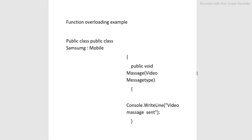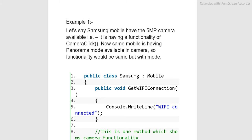Function overloading means having two methods with the same name — that is overloading. A real-life example: say Samsung mobile has a 5MP camera with basic camera-click functionality. Now say the mobile also has panorama mode available in the camera. So the functionality is the same but with a different mode.